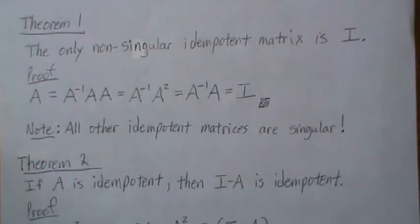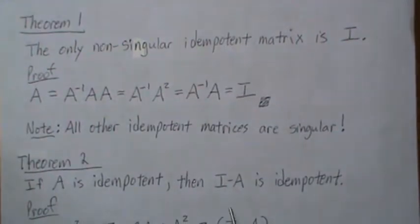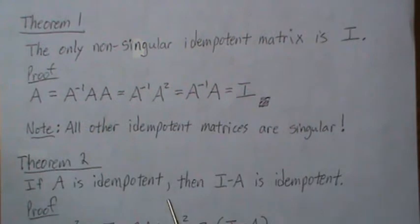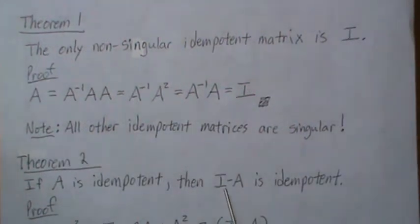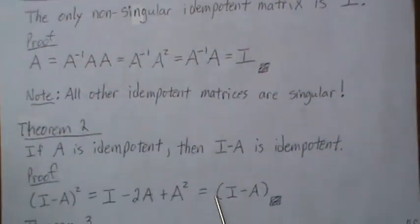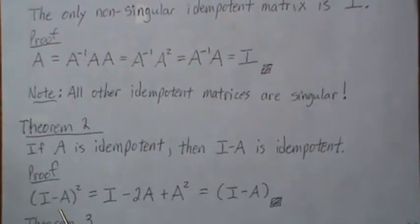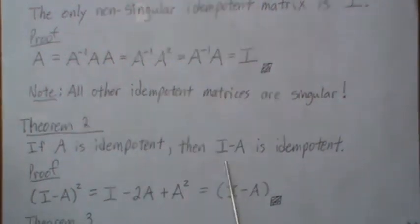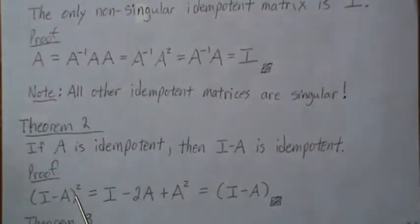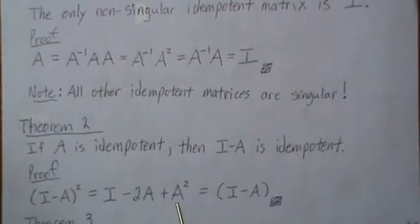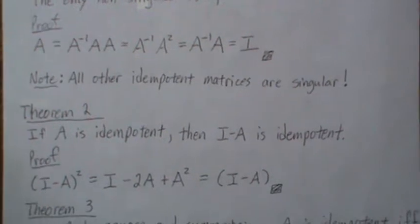Theorem two: if A is idempotent, then I minus A is idempotent. This plays a big part in linear regression and multiple regression. To show that I minus A is idempotent, you just square it. But A squared is A, and 2A minus A is just A, so you get it back — so it's idempotent.